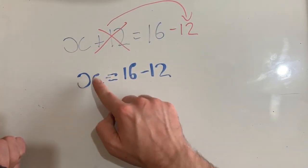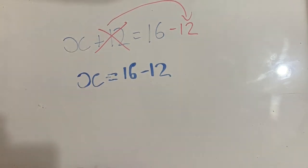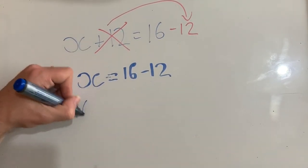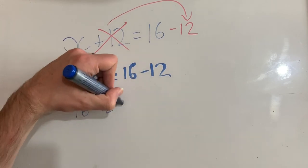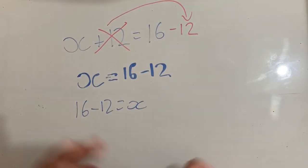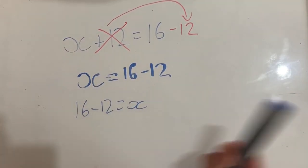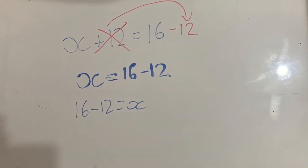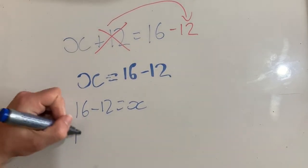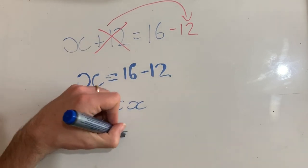Now I could leave it on the same side, but I actually like to flip it around. It just makes a little bit more sense to me. So 16 minus 12 equals x. Remember, it doesn't matter which way around the scales are. Now I can work this out. So 16 minus 12 equals 4.